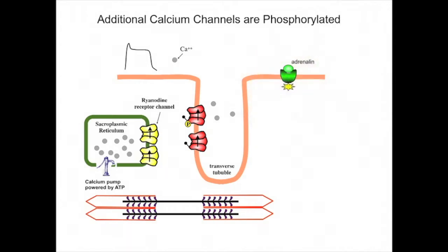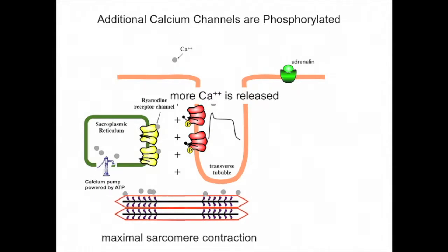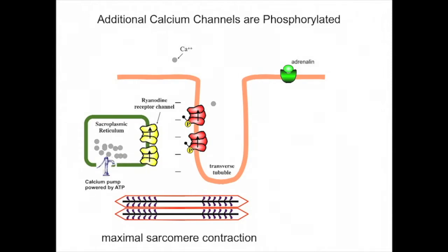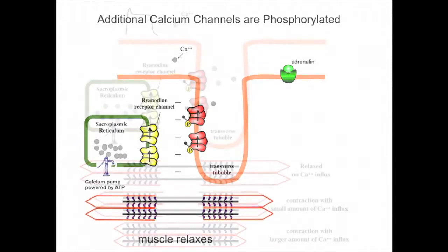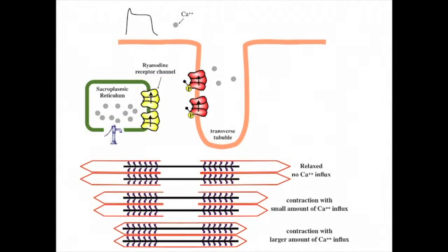Now, additional adrenaline is present and activates metabotropic adrenergic receptors, which in turn phosphorylates additional calcium channels, making them available. An action potential then causes a larger influx of calcium, which opens more ryanodine receptors, leading to more calcium released from the sarcoplasmic reticulum. The enhanced amount of calcium in the sarcoplasm then allows the sarcomeres to shorten maximally. The cell then repolarizes, the calcium is pumped back into the sarcoplasmic reticulum, and the sarcomere relaxes. These features of the dihydropyridine receptors and the ryanodine receptors allow cardiac muscle to achieve various states of contractile force, and this also explains why the adrenaline released by the sympathetic nervous system causes a more forceful contraction of the heart, which in turn raises blood pressure.